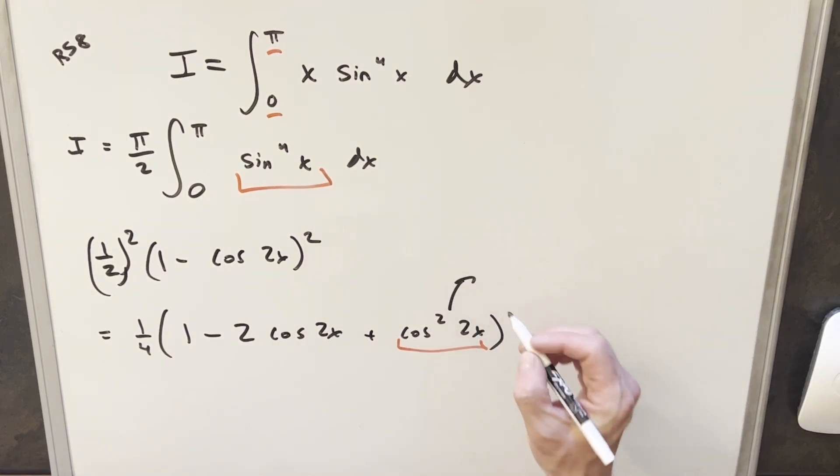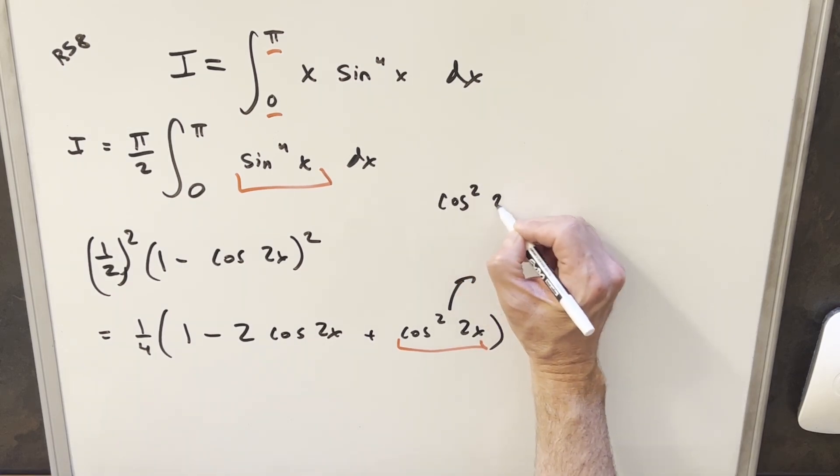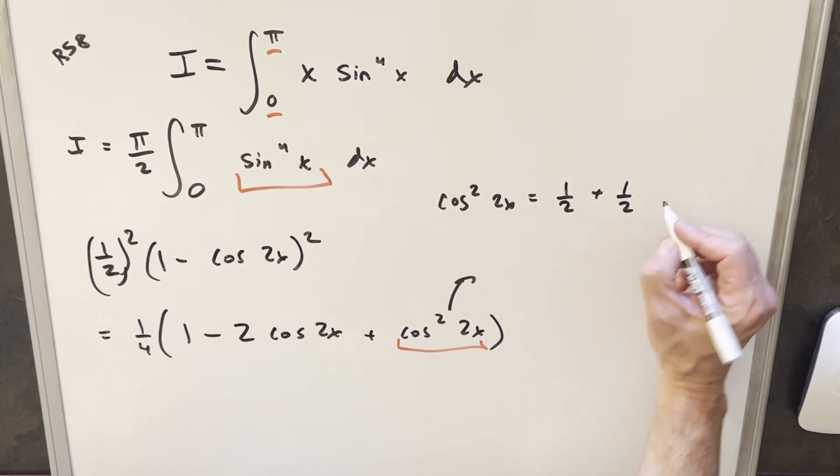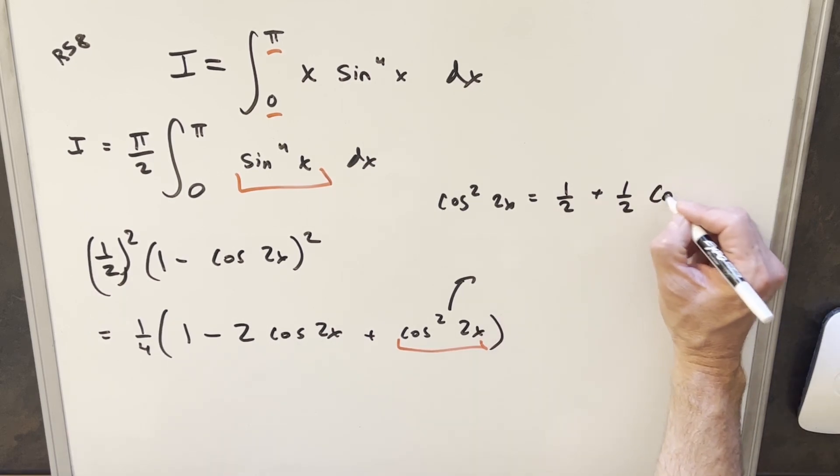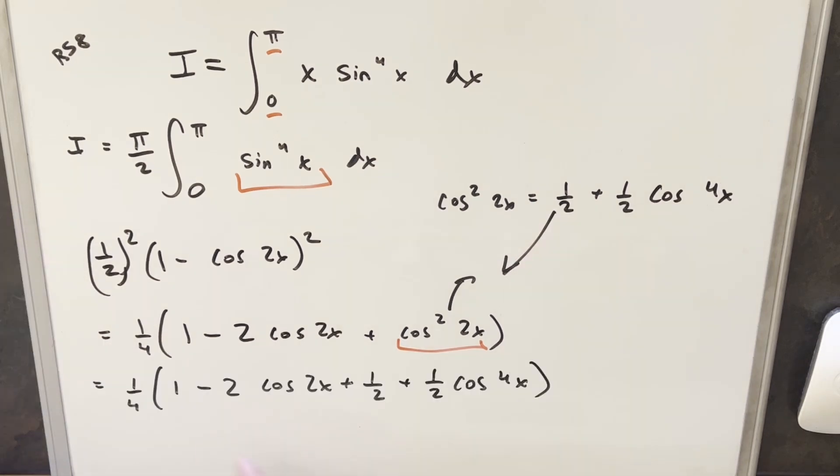And then again, we'll use the power reduction for cosine really similar to sine. So for cosine squared 2x, I can write this as one half plus one half, and then we double this angle. So it's going to be cosine of 4x. And so we'll plug that back in here. And then from here, I'm just going to take my one plus a half and make this three halves just to kind of consolidate terms. So we'll have three halves here and get rid of that. And then we'll just plug this back into our integral and we continue.